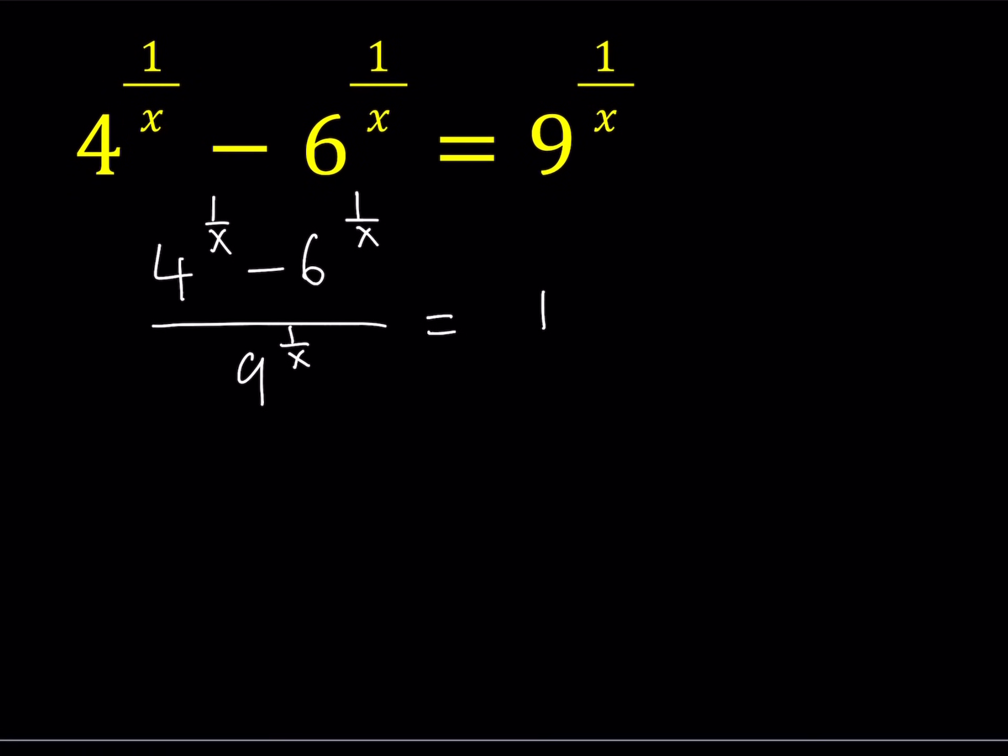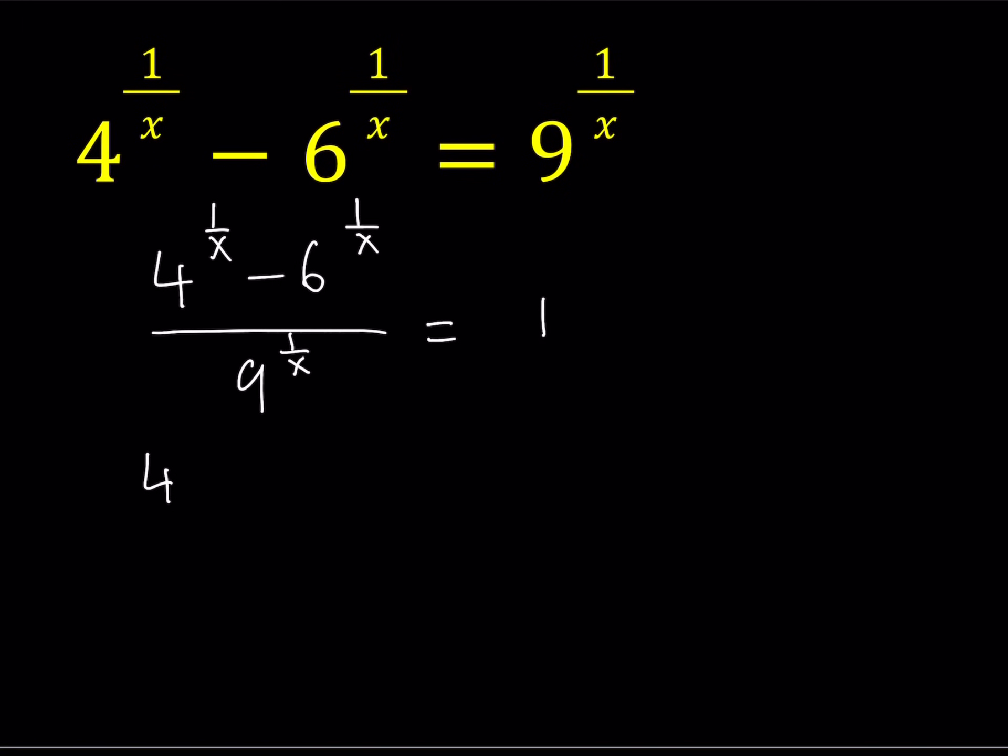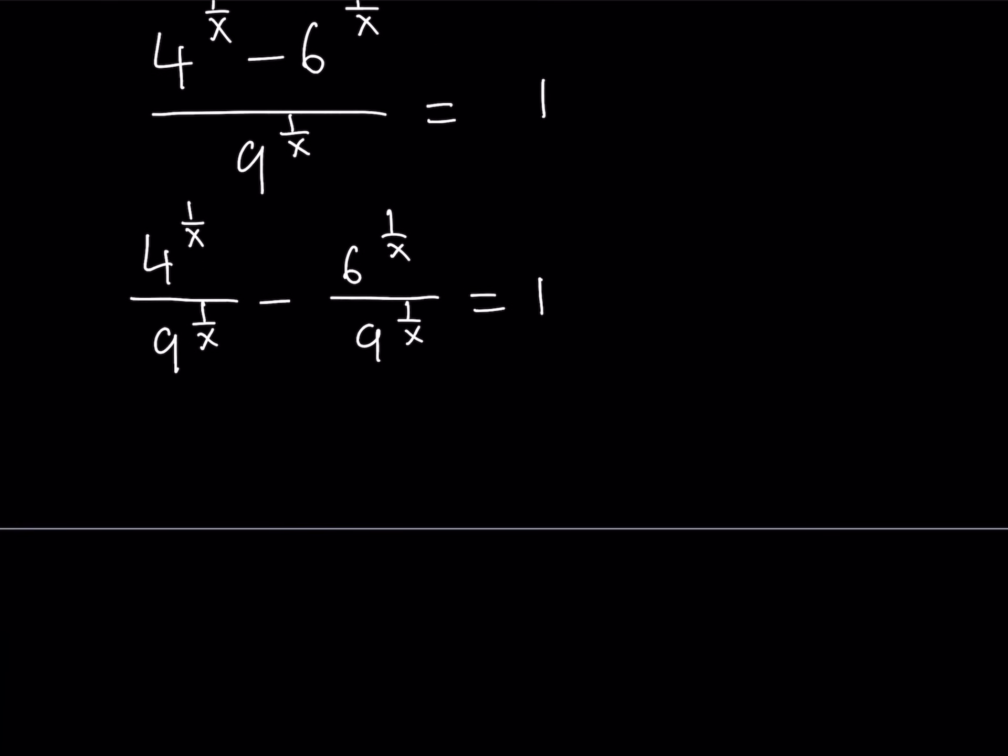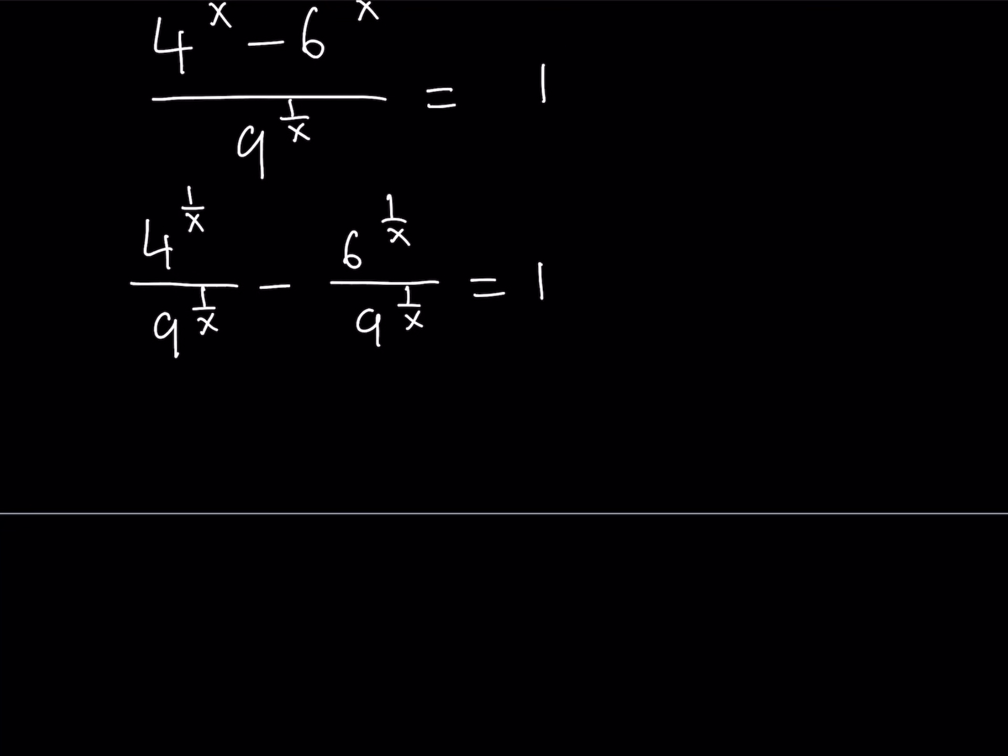So once I do the division, I can just go ahead and separate them. Let's just write it that way. I don't want to skip any steps here to explain everything clearly. So then we can just write it like this. And of course, we have 1 on the right-hand side.